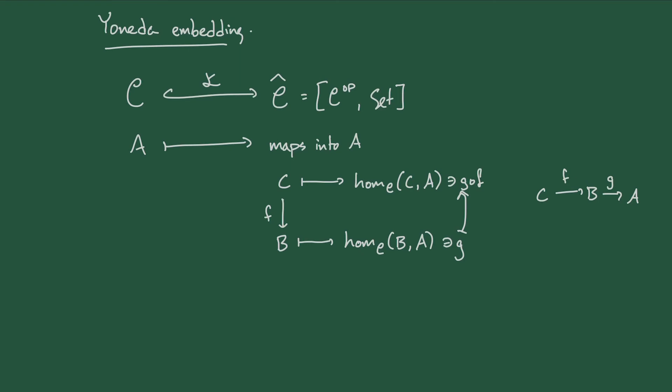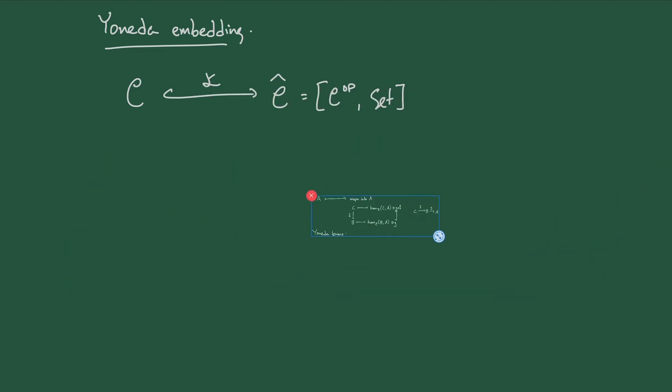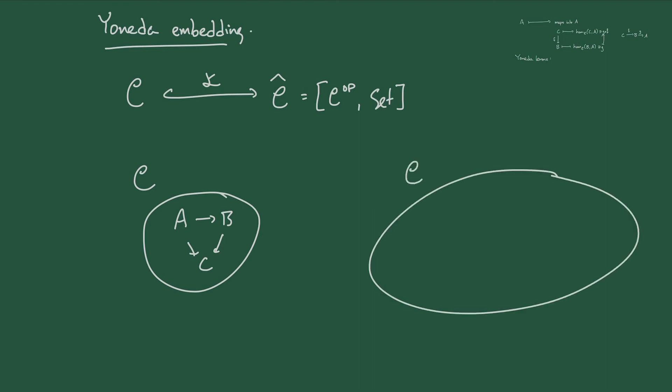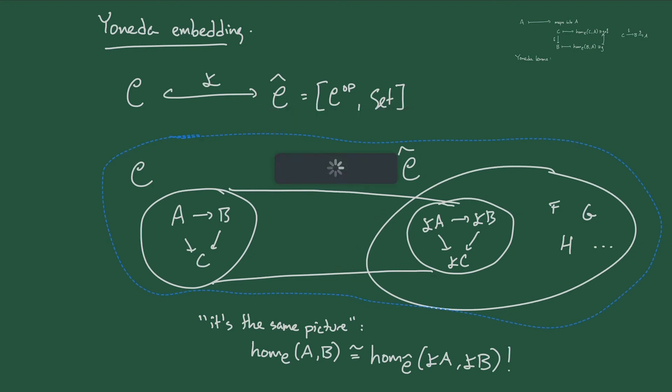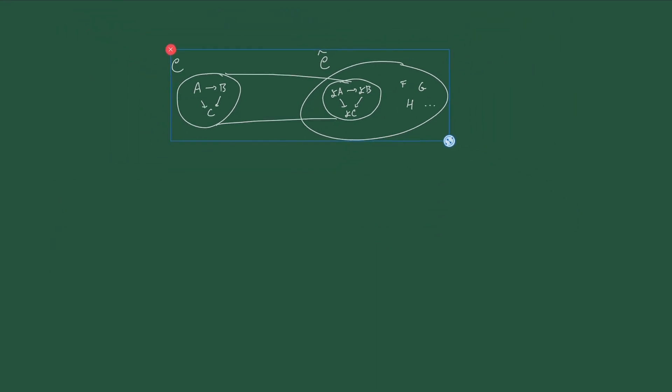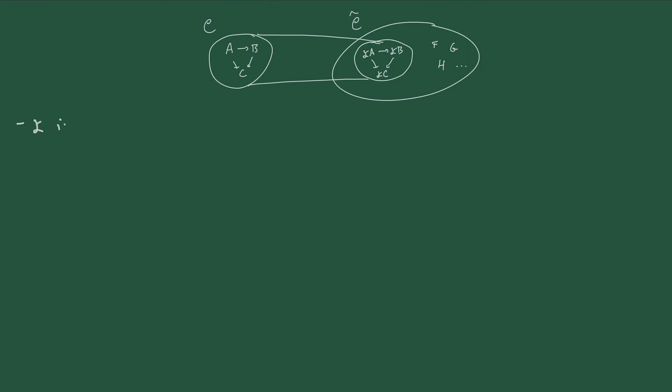We can zoom way out and actually forget about all the details of how the Yoneda embedding is defined, and just look at it abstractly. So we have a category C and a category C hat of presheaves on C. We have a functor from C to C hat that effectively picks out some of the presheaves on C. Those presheaves that are in the image of this functor are called representable, and these are really the most important presheaves for reasons that I'll explain shortly. But the first really special property of the Yoneda embedding is that if we just look at the part of C hat that's in the image of the functor, it looks exactly the same as C. And what I mean by that is that the morphisms in C hat from Yoneda A to Yoneda B are exactly the same as the morphisms in the original category from A to B. Now the jargon for this is that the Yoneda embedding is fully faithful.